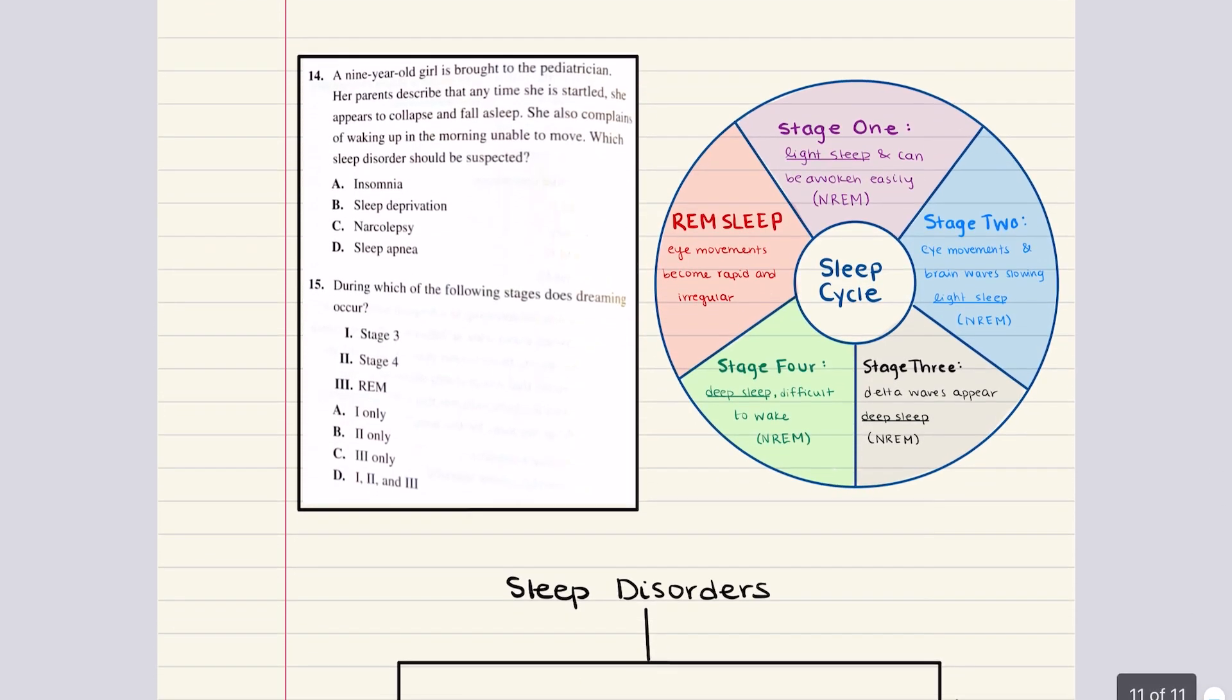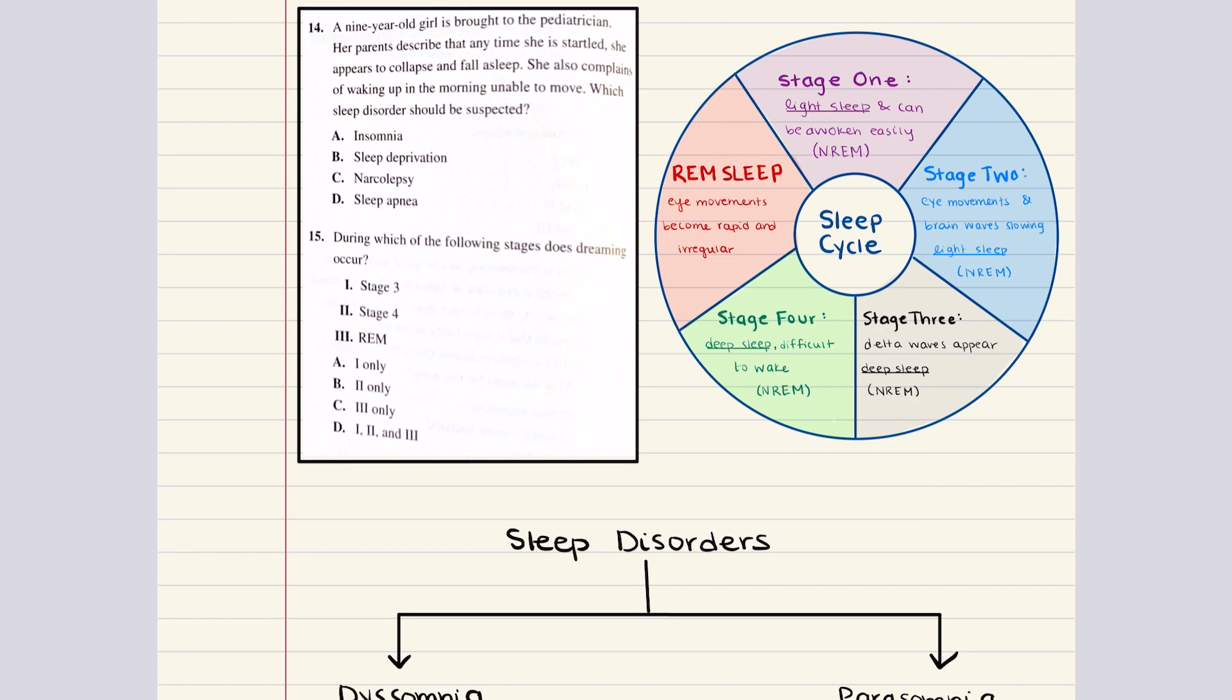Problem 14 says a nine-year-old girl is brought to the pediatrician. Her parents describe that anytime she is startled, she appears to collapse and fall asleep. She also complains of waking up in the morning unable to move. Which sleep disorder should be suspected? The parents and the patient are describing sudden loss of muscle tone and intrusion of REM sleep during waking hours, usually in response to a startling or emotional trigger. They're also describing sleep paralysis, an inability to move despite being awake, usually happening when slowly waking up in the morning. These symptoms are highly suggestive of narcolepsy. The correct answer for 14 is C.